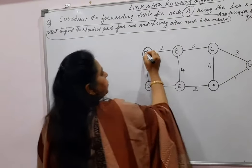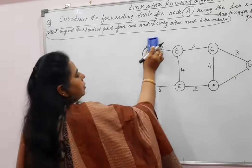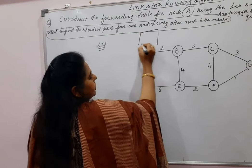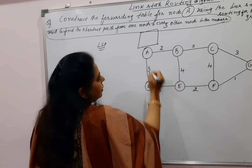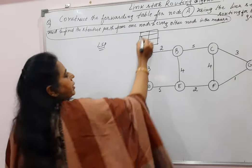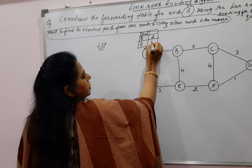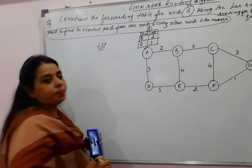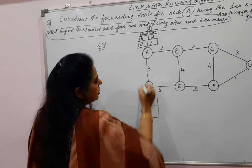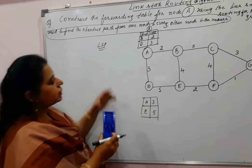The question may be: construct the forwarding table for node A using link state routing. To begin, you need to write the LSP — link state packet. Every node first writes only about its neighbors. For example, node A is connected to B and D, so it maintains information about only those two neighbors: destination B with cost 2, destination D with cost 3. This is the LSP maintained by node A. Similarly for node D: it is connected to A and E, with costs 3 and 5 respectively. This is called the link state packet.